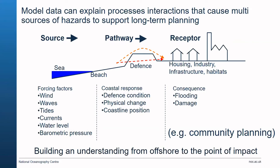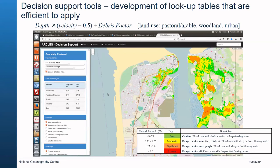A model can explore many different combinations of events and these can be put together into a decision support tool. This example used in the UK supports coastal managers — a traffic light system looks at the debris factor related to land use, velocity of the water, and depth of water. Slider bars allow you to scroll and change maps between different sea level scenarios and storm severities. By running multiple models you create a matrix of information that can be interrogated through web interfaces in a lookup-style approach, much more efficient than running a model in real time.